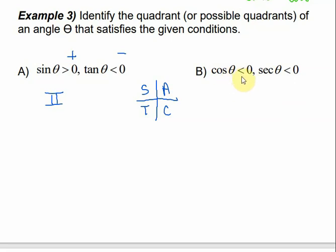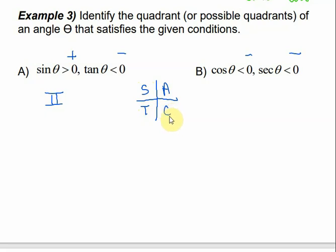For part B, cosine is less than zero and secant is also negative. Cosine and secant are reciprocal functions, so the sign of cosine is the same as the sign of secant — we just need to find the quadrants where cosine is negative. In quadrant one everything's positive. In quadrant four, cosine and its reciprocal are positive. But in quadrants two and three, only sine is positive in quadrant two and only tangent is positive in quadrant three, so cosine would be negative in both. The answer is quadrant two and quadrant three.